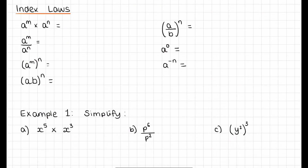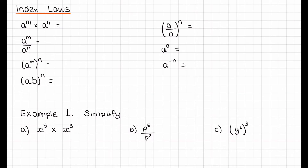Index laws are laws that work for lots of different things — here I've got letters or variables, but they work with numbers as well. So if we have A to the power of M times A to the power of N, the law is A to the power of M plus N. Next, A to the power of M divided by A to the power of N — remember, a divide can also be written as a fraction — and hopefully you guessed that would be A to the power of M minus N.